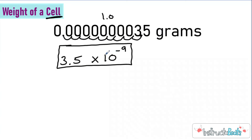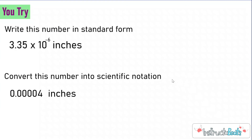Here's an example going from standard form to scientific notation. Let's take a look at a You-try problem. To save time, I gave you both You-try problems right here, so you're going to pause the video. This one up here, you're going to take 3.35 times 10 to the negative 6 and write that in standard form. Then down here, you're going to take this standard form number and write it in scientific notation. If you need help, go back and rewatch the first part of the video. When you're ready, push pause, try it out, and then push play to check your work.